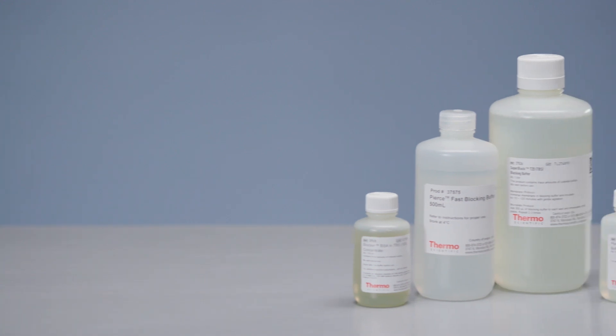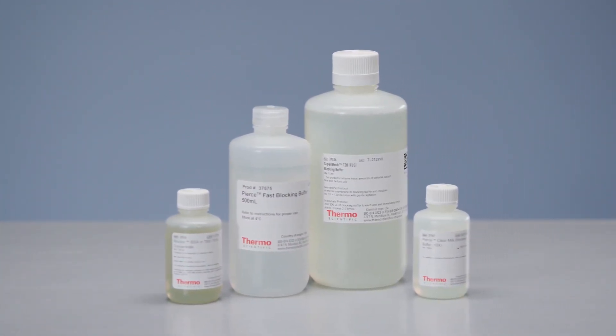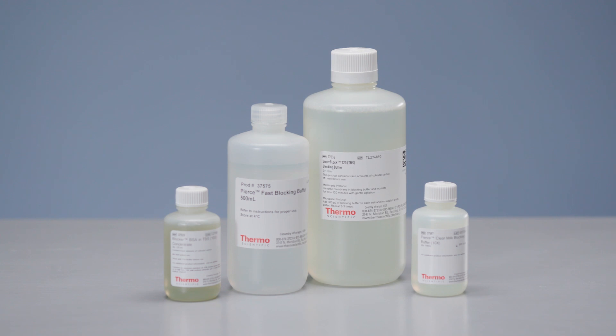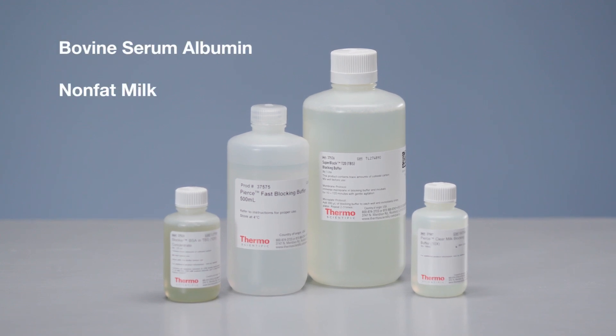Blocking buffers are often comprised of tris or phosphate-buffered saline with tween-20 detergent in up to 5% of a non-reactive protein, such as bovine serum albumin, non-fat milk, casein, or gelatin.